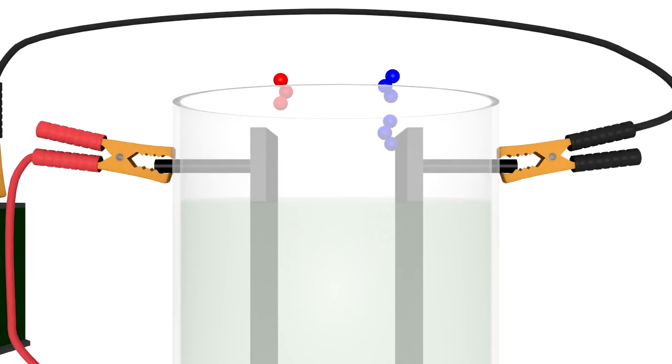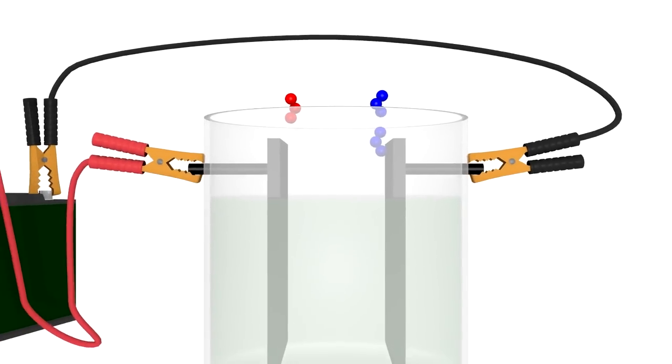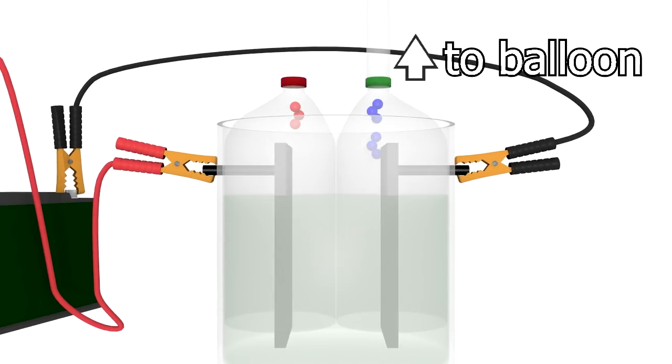But if we do it like this, then we get a mix of hydrogen and oxygen gas coming out. We want just the hydrogen, so we put something between them and provide separate outlets above them. That way we direct the hydrogen into the balloon and the oxygen can just go into the surrounding air.